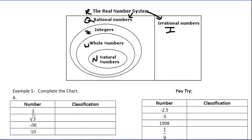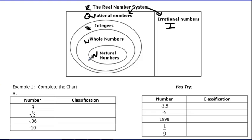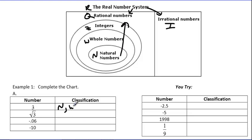Let's take a look at our real number system and try to place these numbers where they belong. The number 3 — if I ask you to count to 3, you go one, two, three. The fact that you count naturally to it makes it a natural number. And because it's a natural number, it's all of the above — so it's a whole number, an integer, a rational number, and a real number.